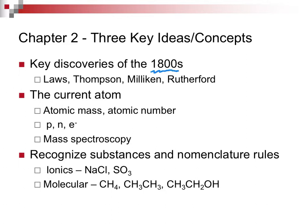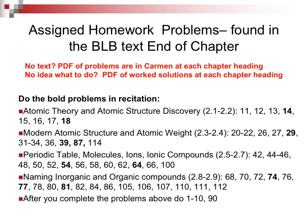The three key ideas are concepts. There were discoveries made in the 1800s — laws attributed to Thomson, Millikan, and Rutherford. We're going to talk about what's in the current atom, and finally the nomenclature rules. I can't emphasize that enough: the names of things have to be learned.